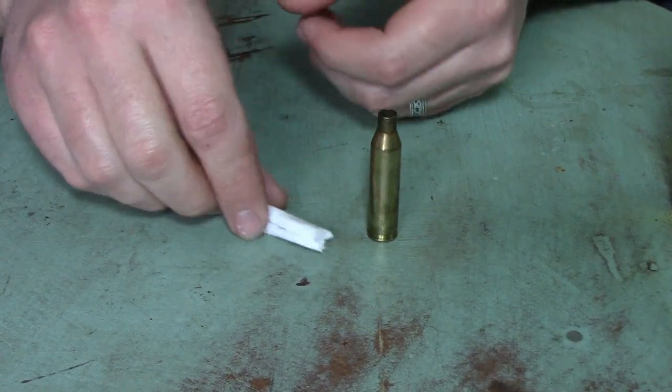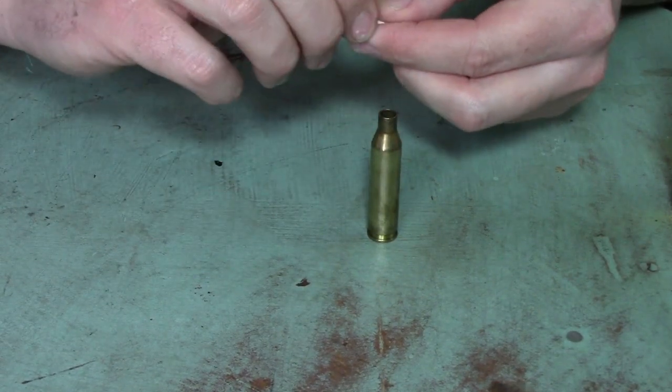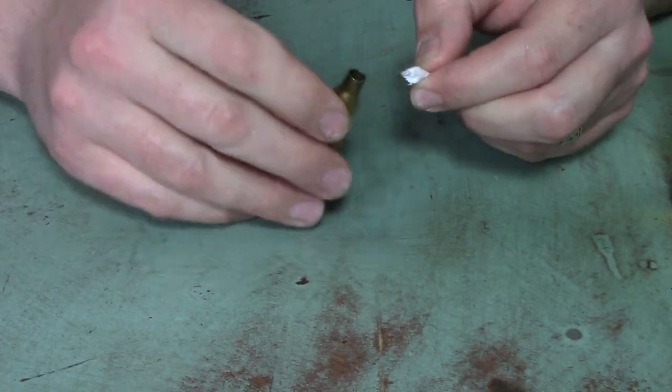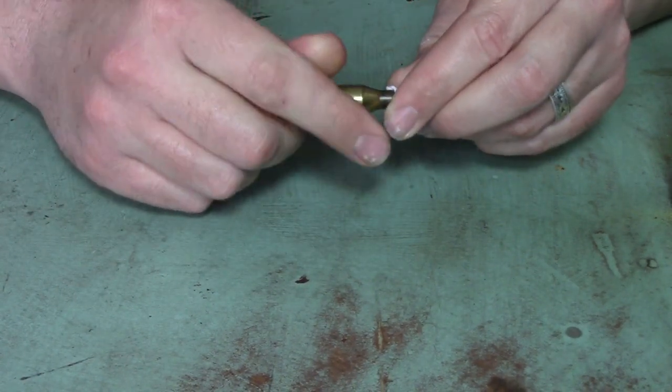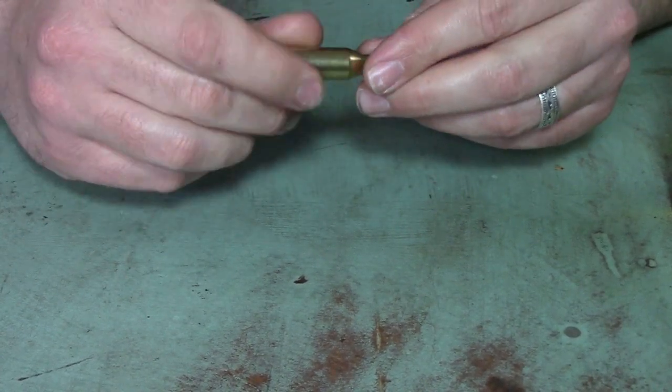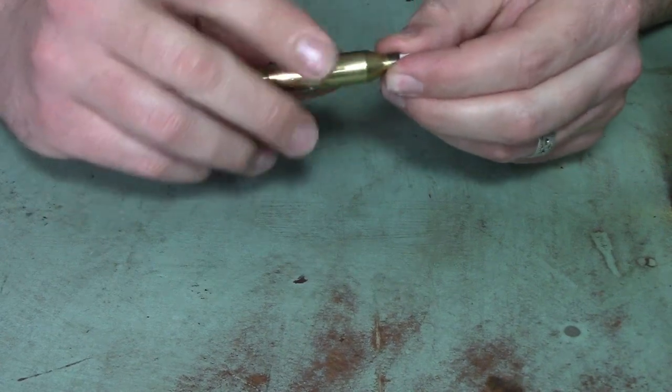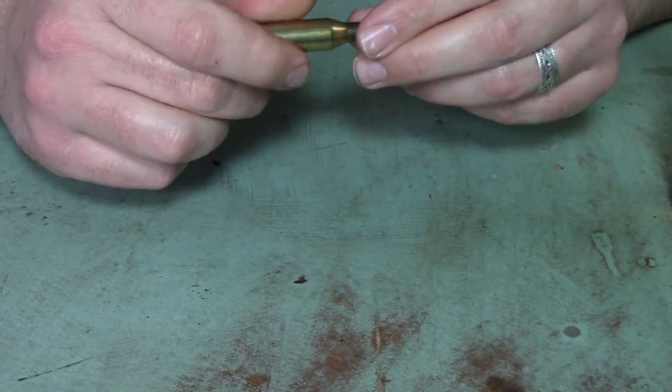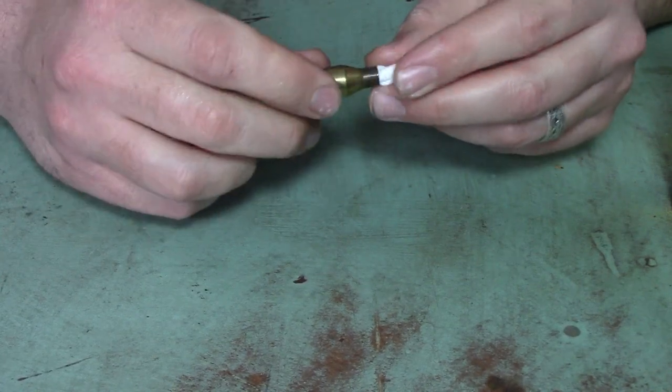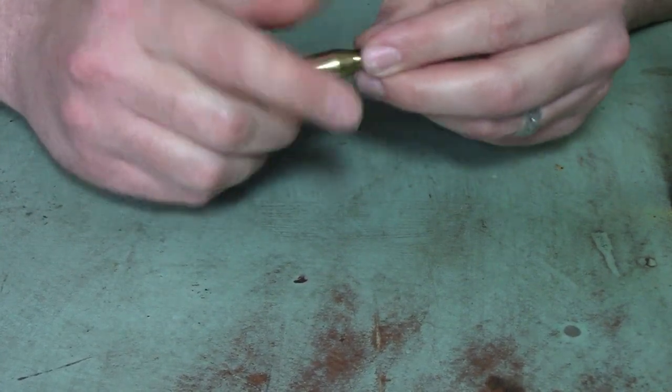Now for our wick, our cotton fabric. What I like to do is just kind of pinch one end, get it kind of pinched tight, and then I'll start putting it in my casing, and then I'll twist my bullet casing. And it almost works just like a nut and a bolt.